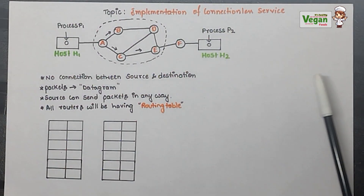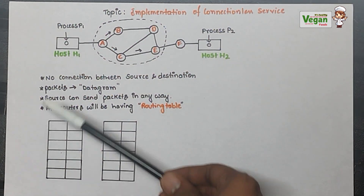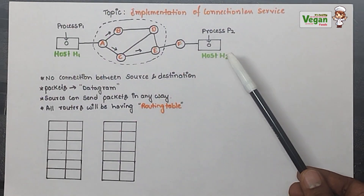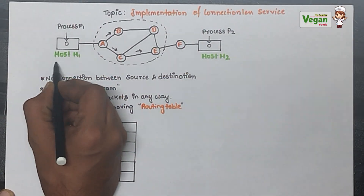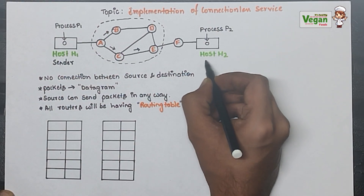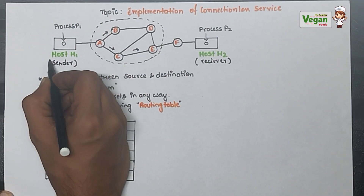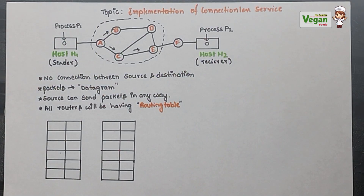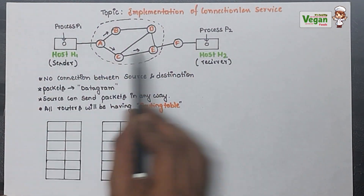What implementation of connectionless service means is there will be no direct connection between the source and the destination. If you consider host one as the source and host two as the destination — that is, if you are sending a message to your friend — you become the sender and your friend becomes the receiver. For example, you are sending a Gmail or WhatsApp message to your friend.